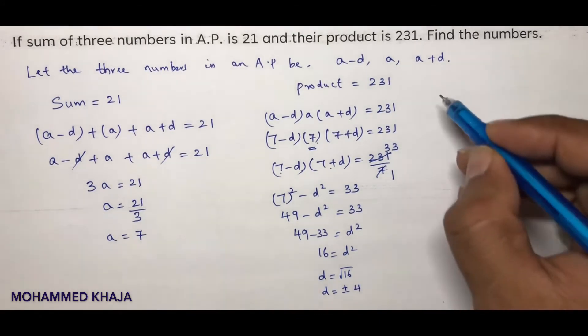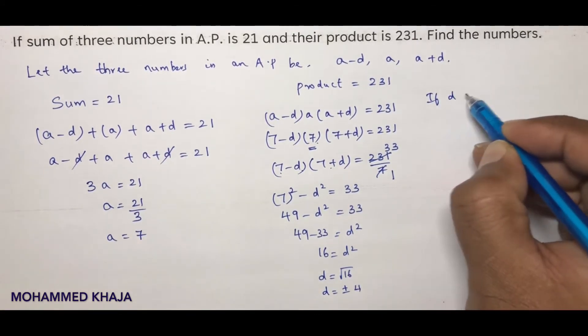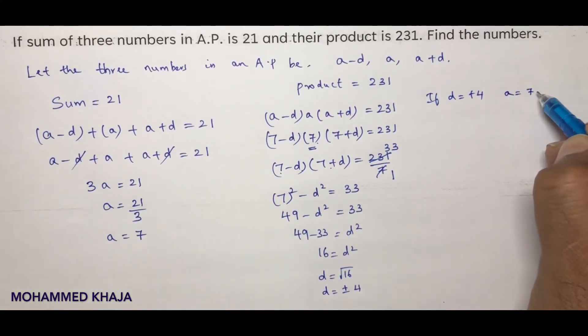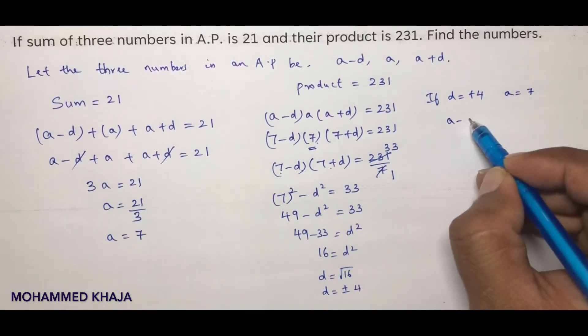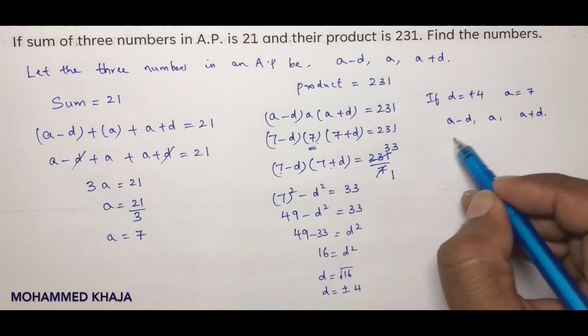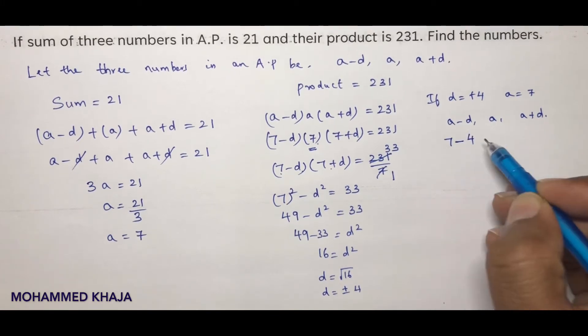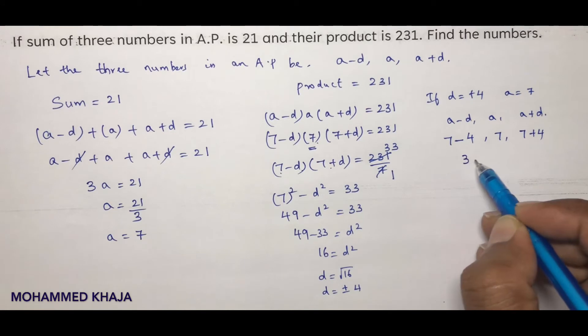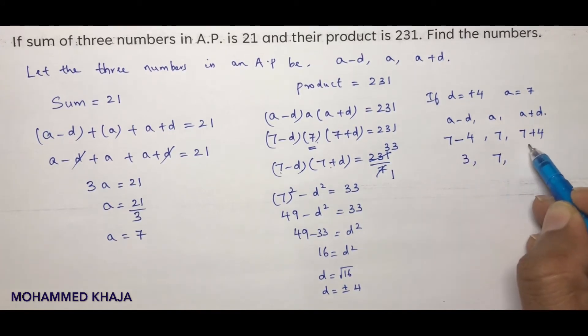Suppose if d is plus 4, then a is 7. So a minus d, a, and a plus d: three numbers. A is 7, a minus d is 7 minus 4, then 7, then 7 plus 4. So 7 minus 4 is 3, 7, and 11. These are the three numbers.